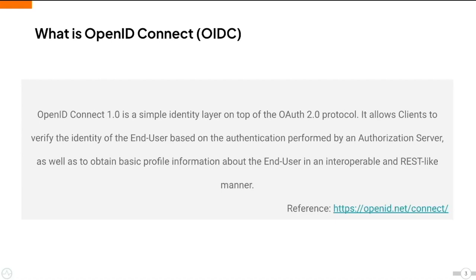OIDC is a simple identity layer on top of the OAuth2 protocol. It allows client applications to verify the identity of the end-user based on the authentication performed by an authorization server, as well as to obtain basic profile information about the end-user.